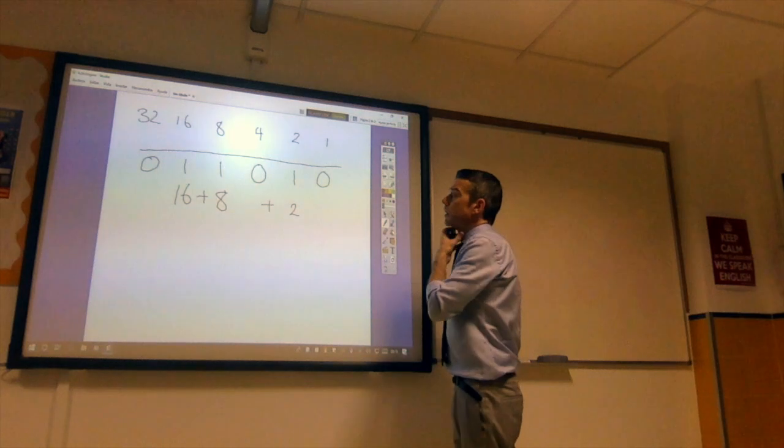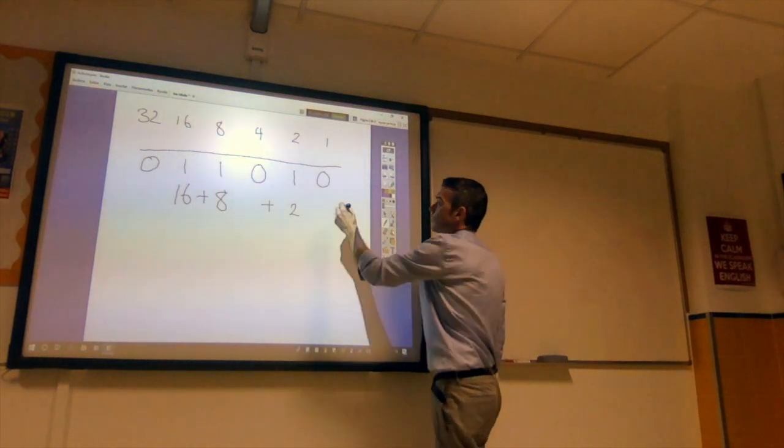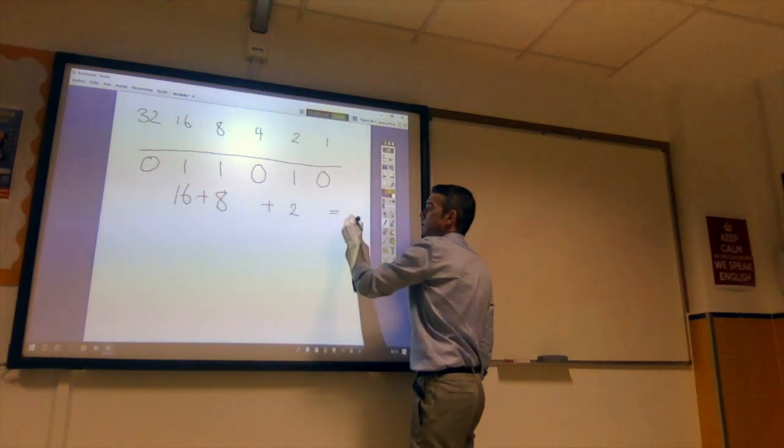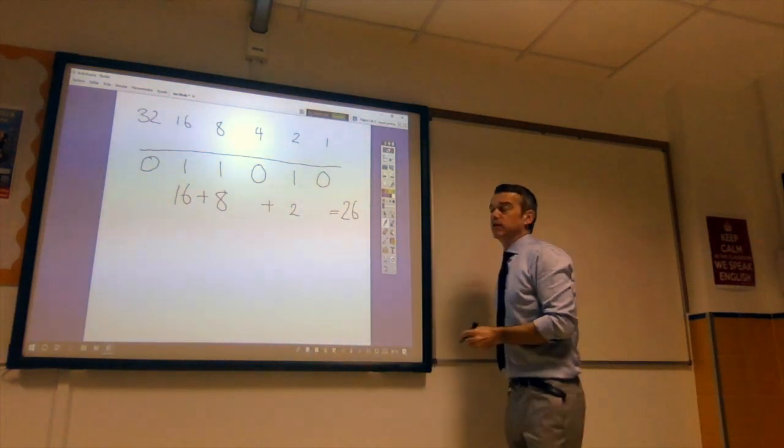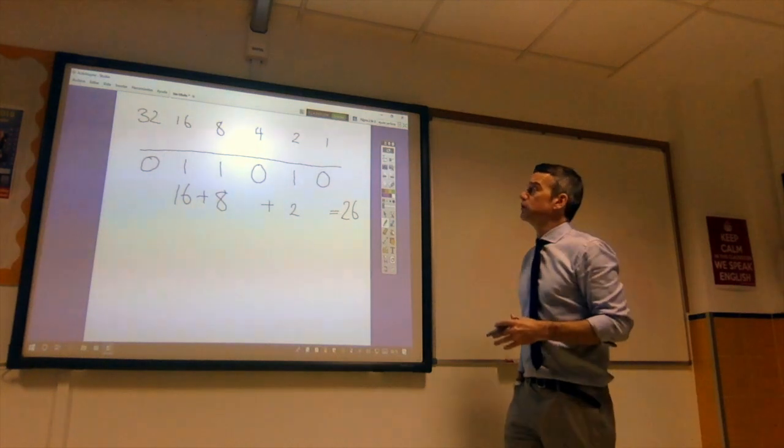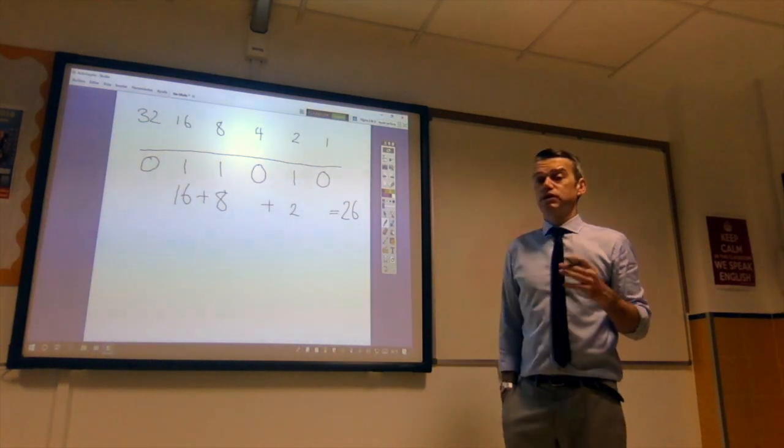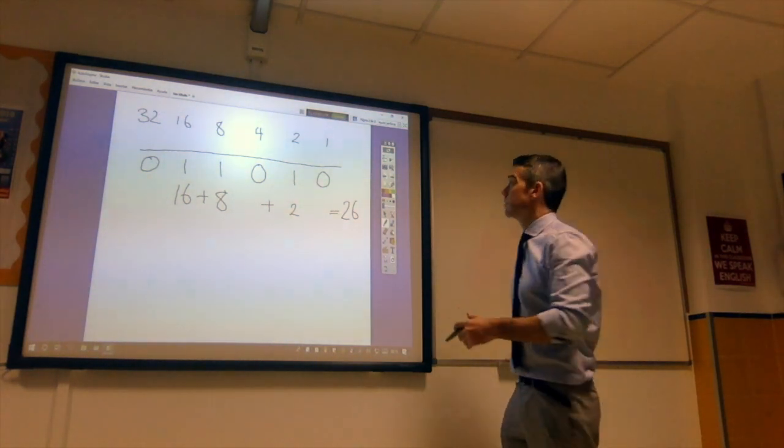So we get 16 plus 8, 24 plus 2, 26. And that's how we convert from binary to the denary or decimal equivalent.